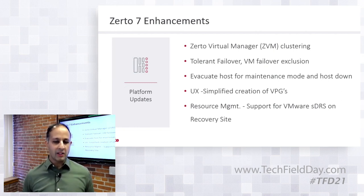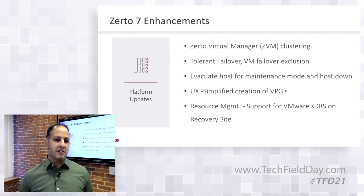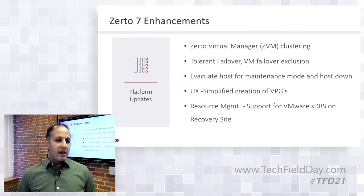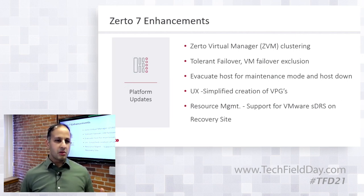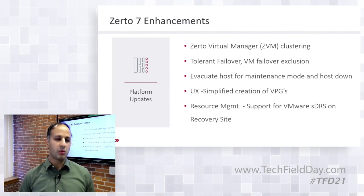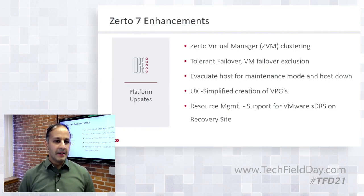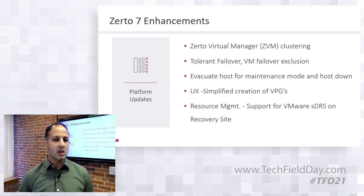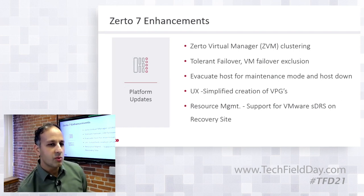We added evacuate host for maintenance and host down. When ESXi hosts need maintenance or replacement, clicking that feature drains all the DR resilience workload and components, allows the host to be taken down, then repopulates. We also provided UX simplicity — customers can now copy a VPG setting as a template to stamp across multiple VPGs, rather than recreating each one. Additional resource management enhancements include SDRS support on VMware vSphere sites without breaking replication.